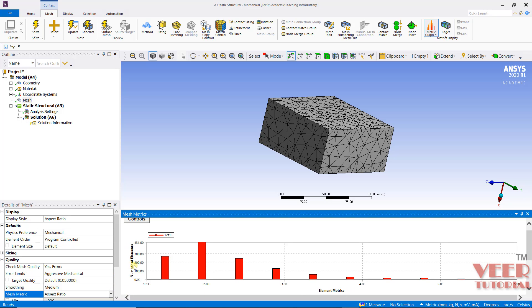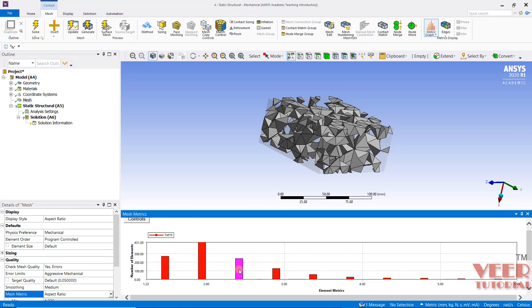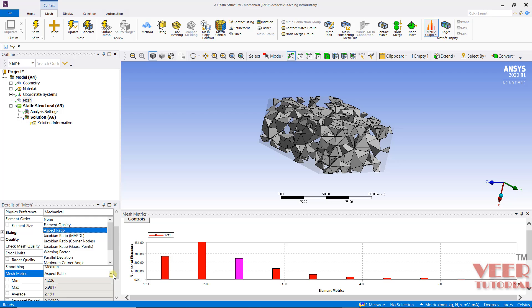on the left side we have number of elements. So it is going to show the aspect ratio of these elements. So if I click on this element, we can see it is showing the element with this aspect ratio. Similarly, this element like this. So here we can select the elements depending on the type of element quality.